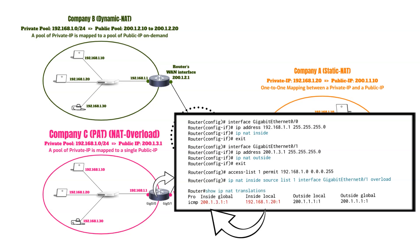Consequently, the source port and IP of the internal device is translated to a unique combination of the public IP and a new dynamically chosen port number by the NAT device. The translation table on the NAT device keeps track of this mapping. When external traffic is received, the NAT device uses the destination port number to resolve it back to the corresponding internal private IP and port, ensuring that the data reaches the correct internal device. This mechanism is key in managing simultaneous connections and multiplexing traffic through a single public IP, especially when handling numerous devices behind a NAT gateway.